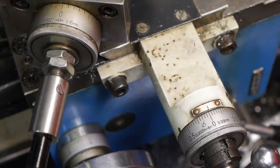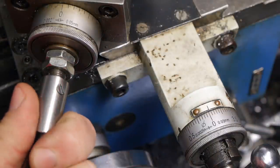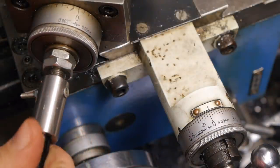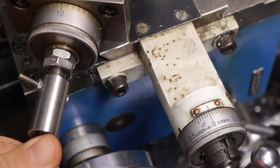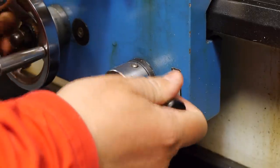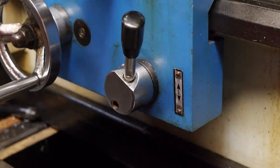Setting the cross slide dial to zero and dialing in a bit of a cut with the compound slide, engaging the half nuts and I should be ready to go.